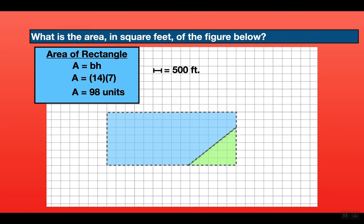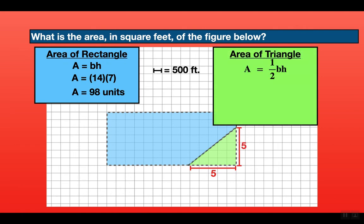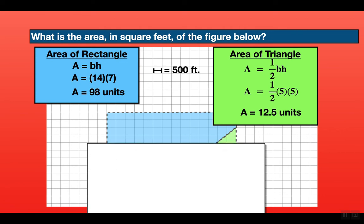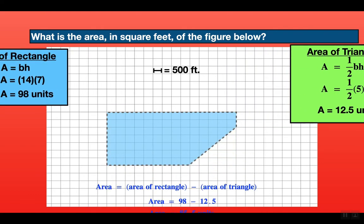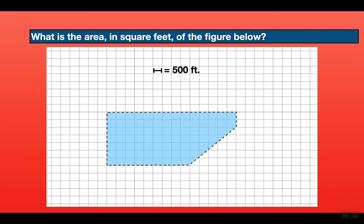Now let's get the area of the triangle on the bottom right. The base of the triangle is 5 units and the height is also 5 units. The formula is one-half times base times height: one-half times 5 times 5 gives us 12.5 square units. To get the area of the blue shape we subtract: 98 minus 12.5 gives us 85.5 square units.